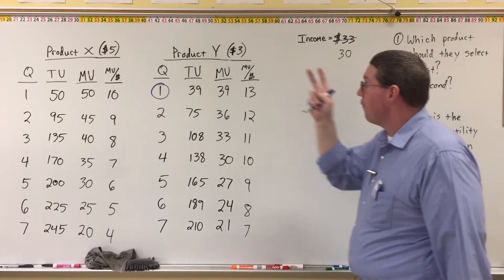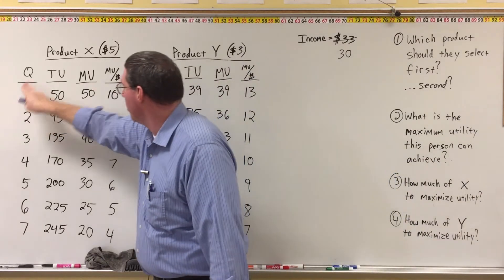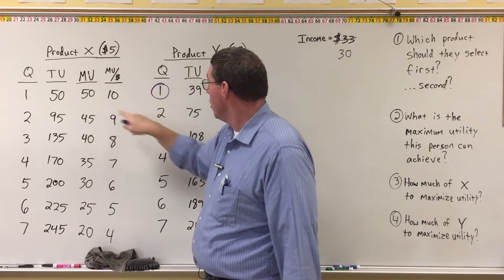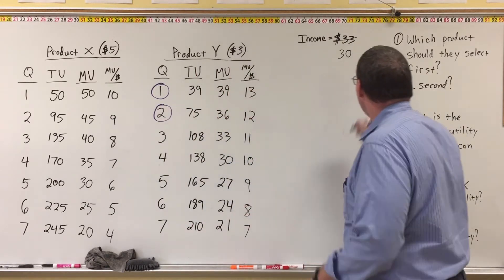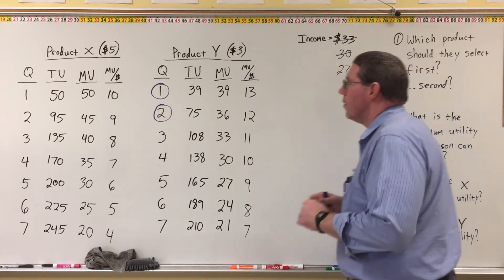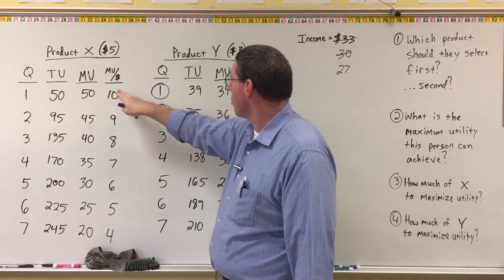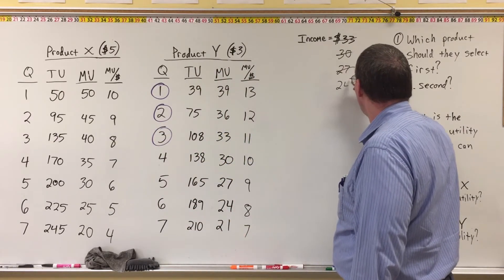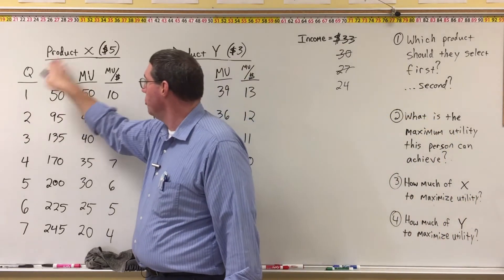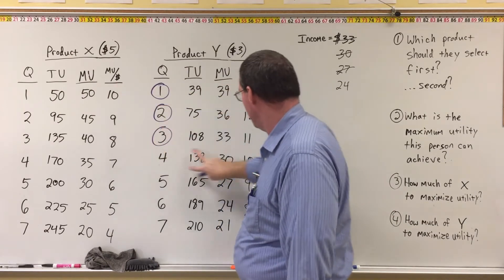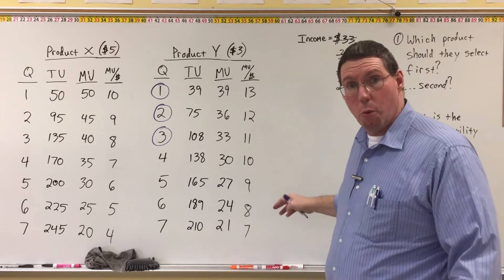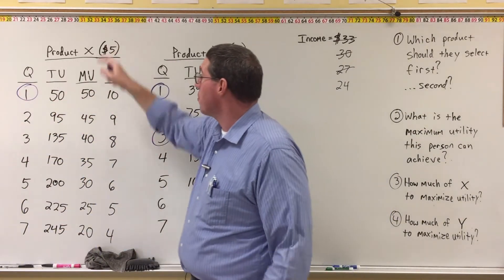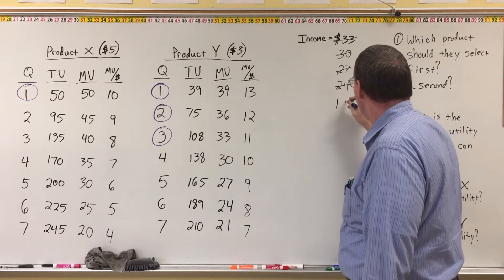Now, for the second marginal unit, we're going to compare the first unit of X with the second unit of Y, so we're comparing 10 to 12. And so you can see here, 12 is higher than 10, so we're going to go with the second unit of product Y. That's going to knock us down to $27, because it's $3. Then we're going to compare the first unit of X to the third unit of Y, so we're comparing 10 to 11. 11 is higher, so we're going to purchase a third unit of product Y. That's going to bring us down to 24. And now we're going to compare again, the first unit of X to the fourth unit of Y, so we're comparing 10 to 10. They're equal, so we can pick either one. We're indifferent between these two products, so maybe for a little variety, we'll select the first unit of product X, which costs $5. Therefore, our $24 will come down to $19.